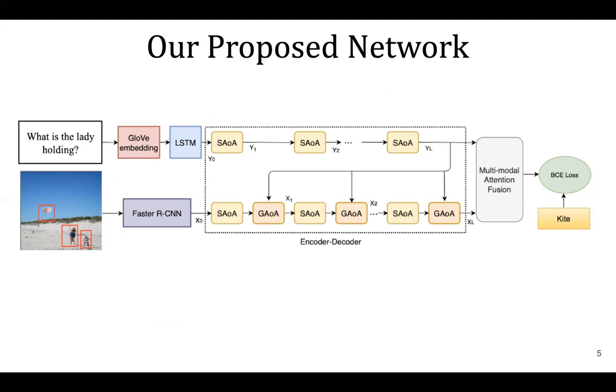Both features are fed to an encoder decoder module consisting of cascaded modular co-attention on attention layers and outputs image and question features. Both features are combined together to generate the desired answer by a multi-modal fusion module.